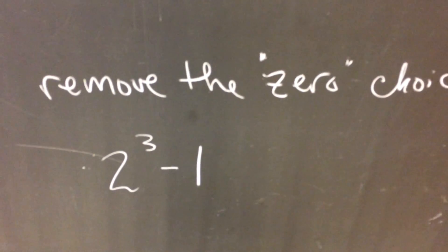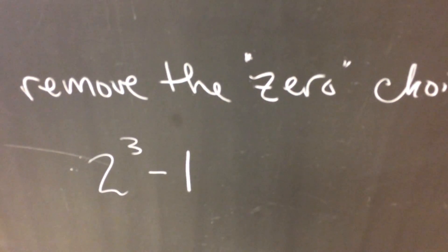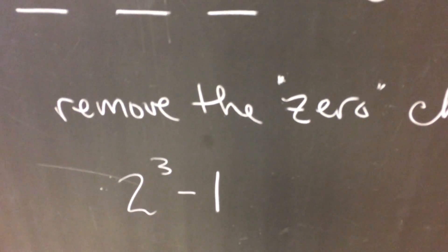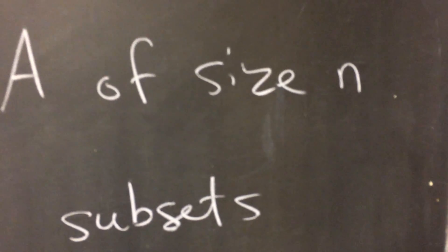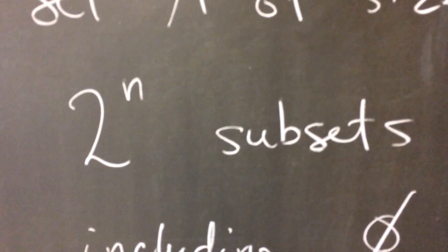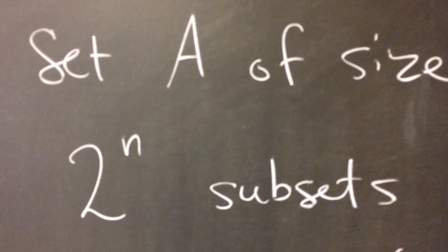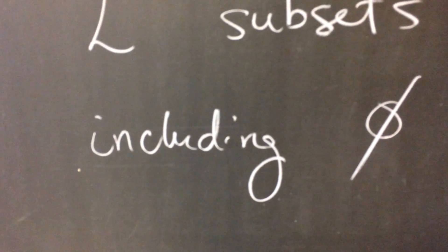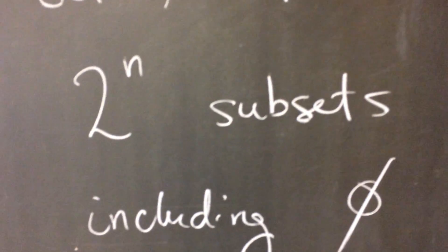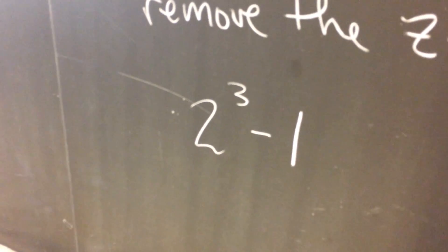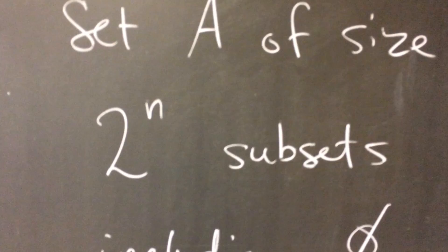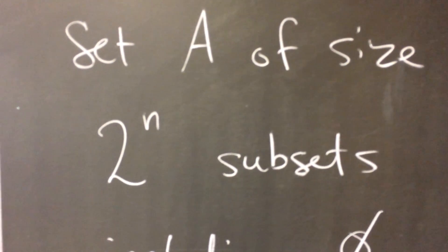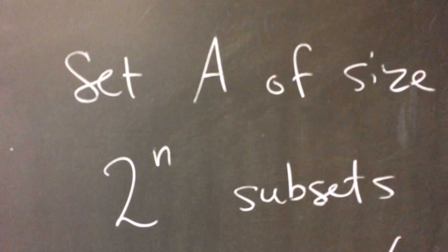If we remove the zero choice, that's two cubed minus one different combinations that are not that zero combination, the one that doesn't have anything in it. So in general, if you take any set A of size N, there are two to the N subsets of A, two to the N ways to pick different combinations of things out of A, that's including the empty set. If you don't want to include the empty set, you've got to subtract one from the final result. So two to the N ways to pick unique combinations of N distinct items.